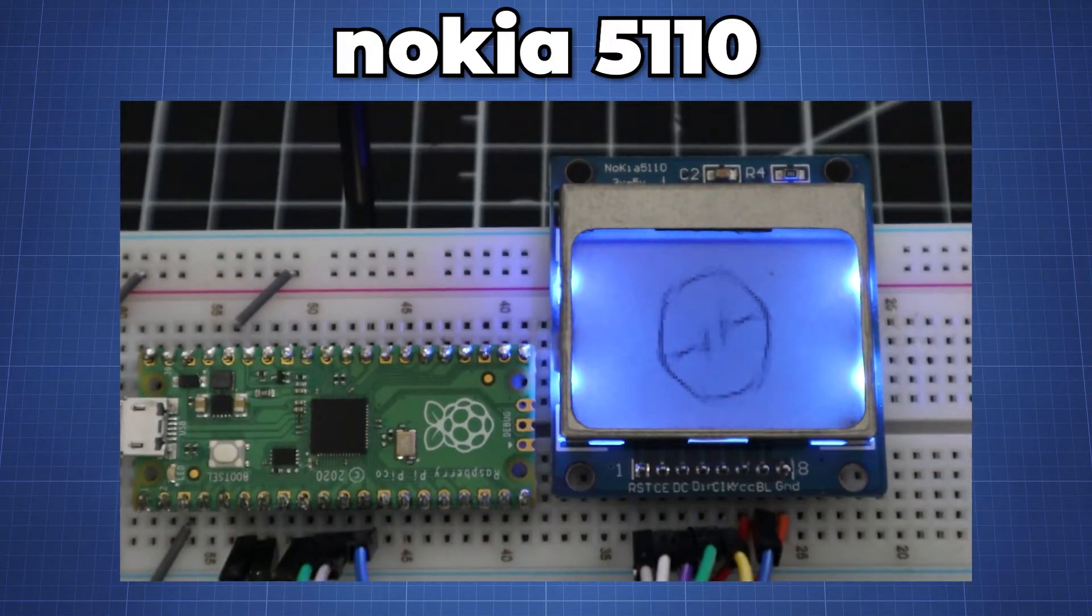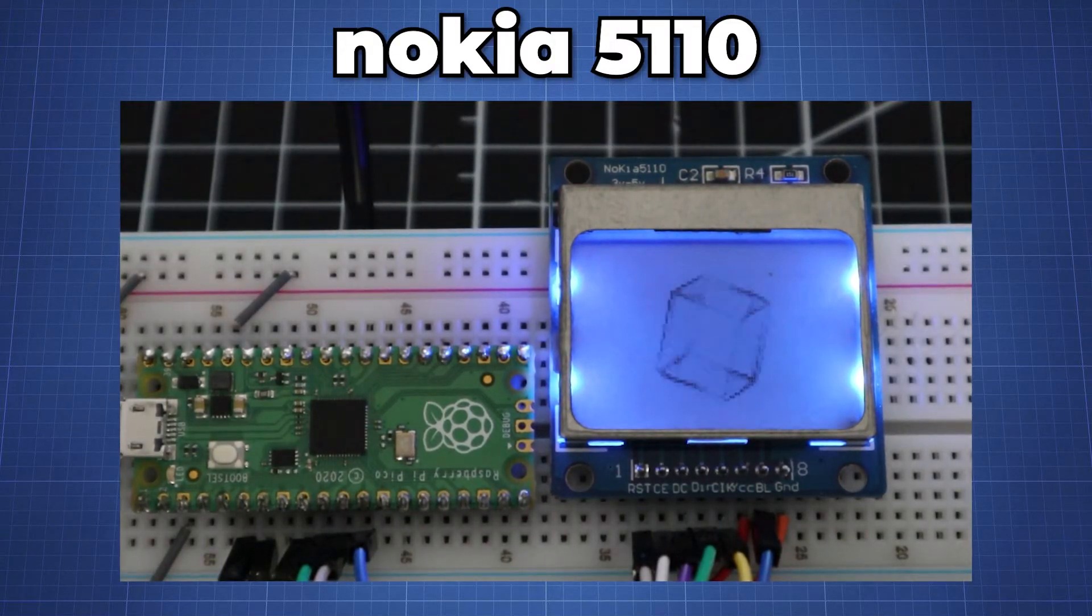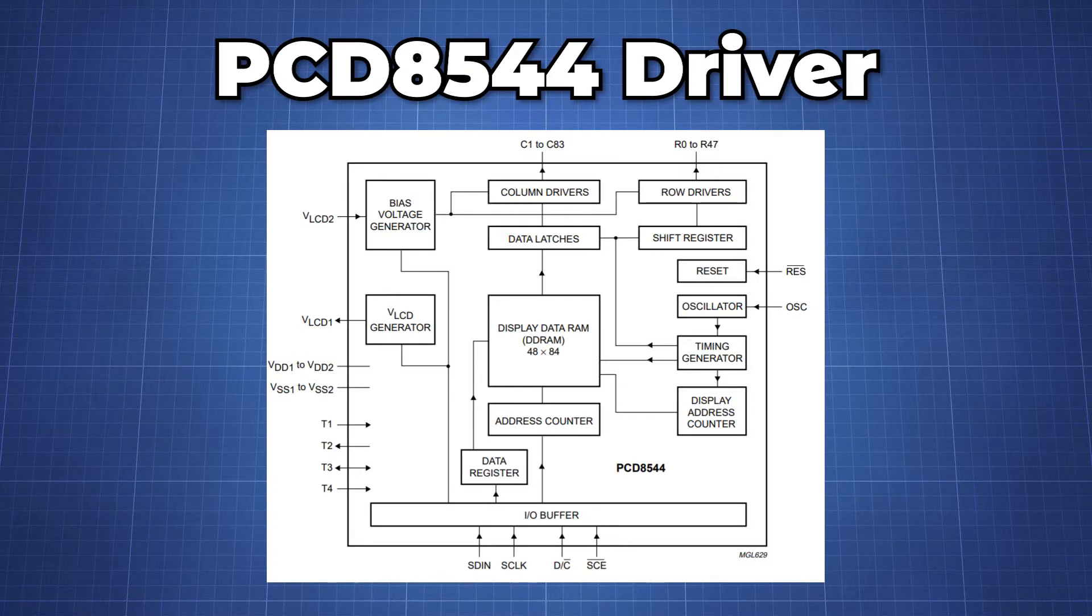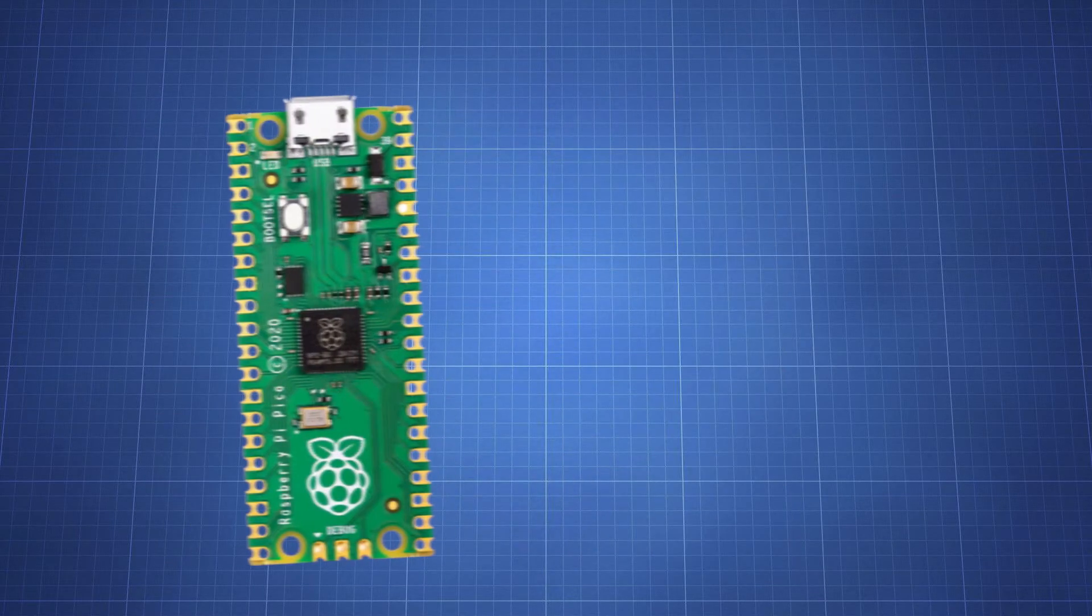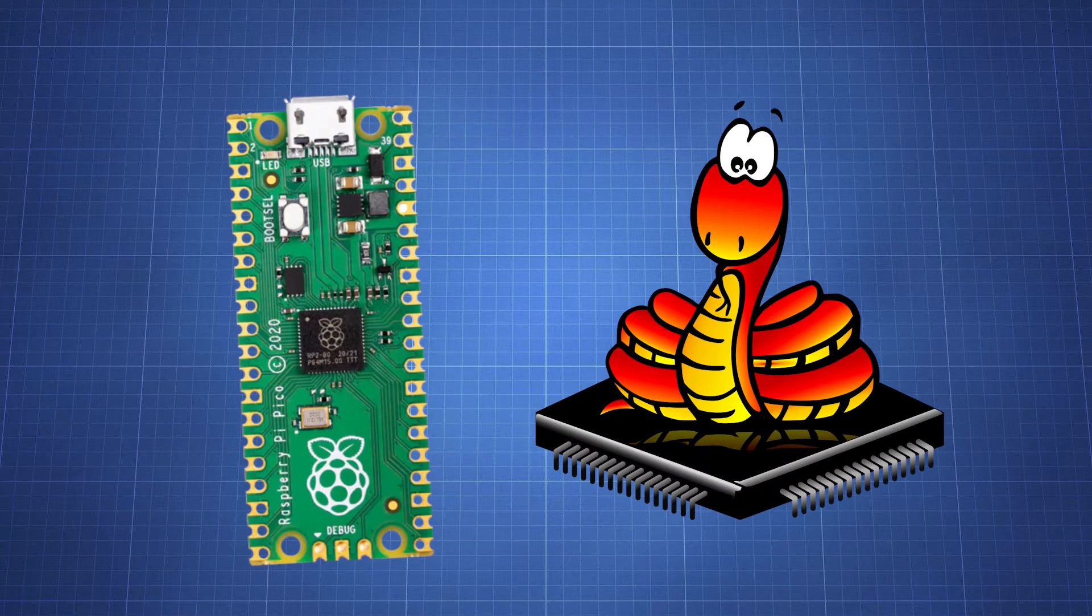In this video we will look at how to use the Nokia 5110 LCD screen based on a PCD8544 controller with the Raspberry Pi Pico using MicroPython.